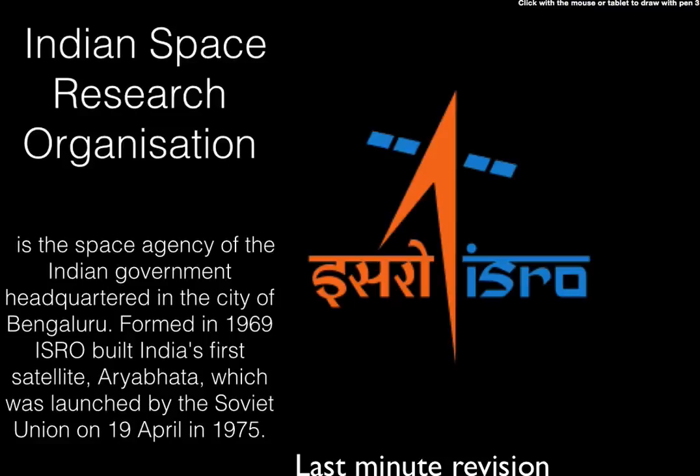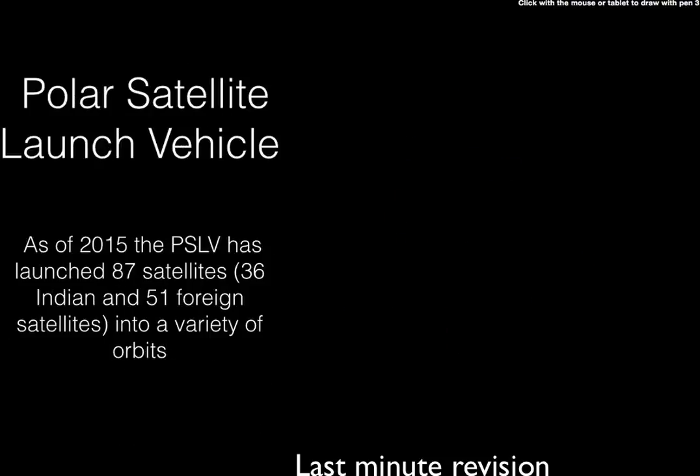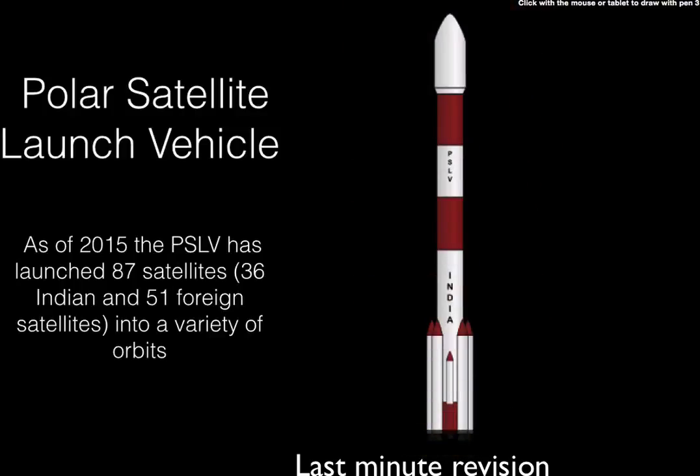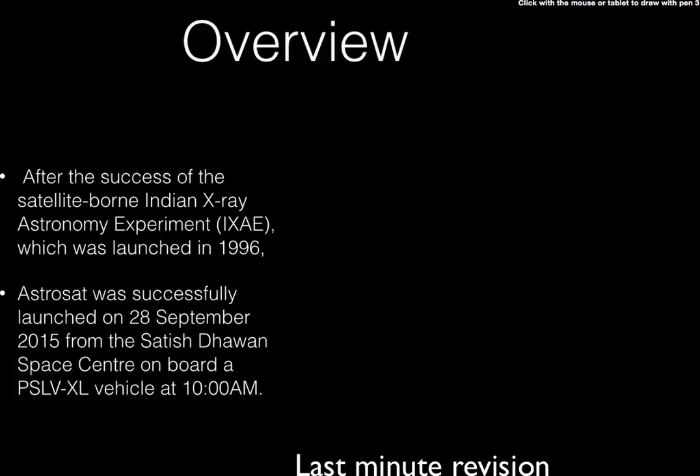ISRO stands for Indian Space Research Organization. It is the space agency of the Indian government, with headquarters in Bengaluru. It was formed in 1969; before that, from 1962, another research organization existed, formed by Jawaharlal Nehru. The first satellite ISRO launched was Aryabhata, with the help of the Soviet Union, on 19th April 1975. Till now they have launched around 87 satellites — 36 Indian and 51 foreign.